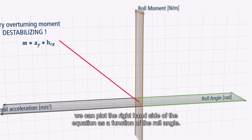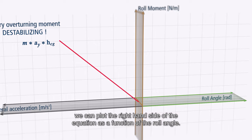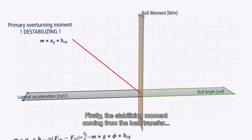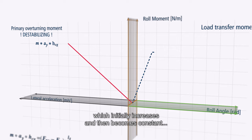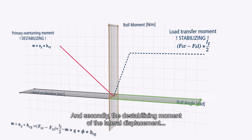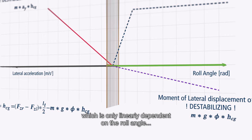On the other side of the graph, we can plot the right-hand side of the equation as a function of the roll angle. Firstly, the stabilizing moment coming from the load transfer, which initially increases and then becomes constant as all the weight is concentrated on the right tire. And secondly, the destabilizing moment of the lateral displacement, which is only linearly dependent on the roll angle, as all other components are constant.